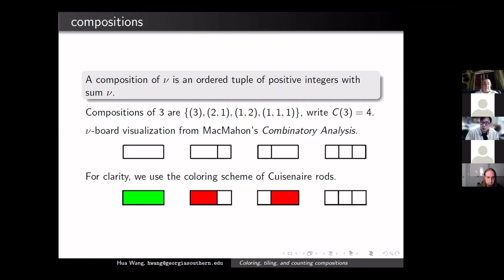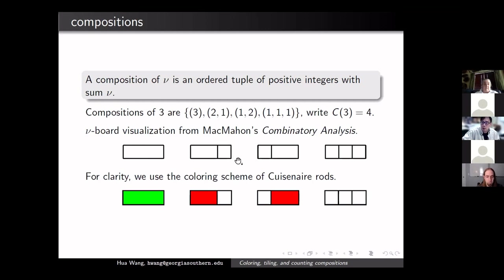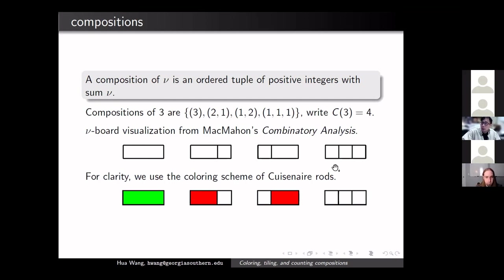For almost all of this talk, we will be interested in the tiling representation of a composition. If we look at compositions of 3, we take a 1×3 board, and each tile corresponds to the size of the part. So for 2+1, we have a 1×2 tile and a 1×1 tile. This is a straightforward way of representing compositions, but it's interesting how many combinatorial insights one can gain from this tiling representation.